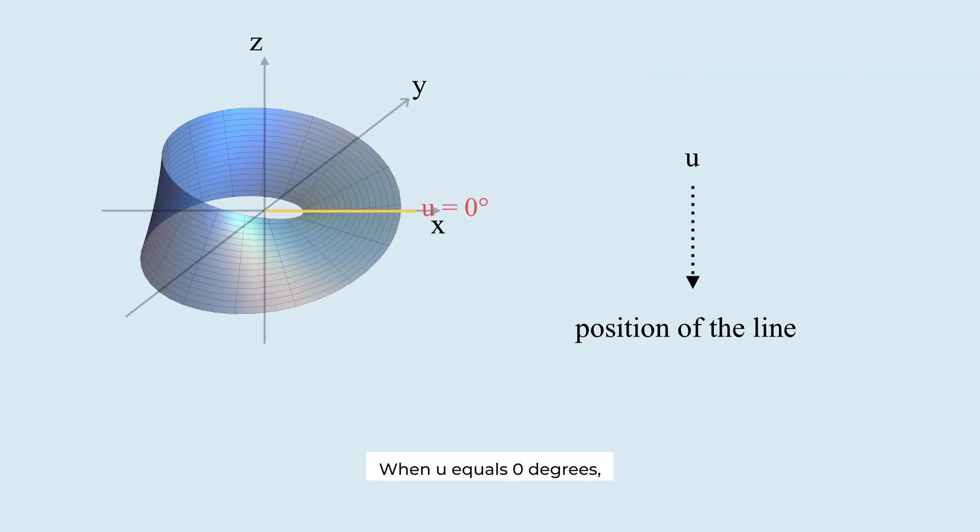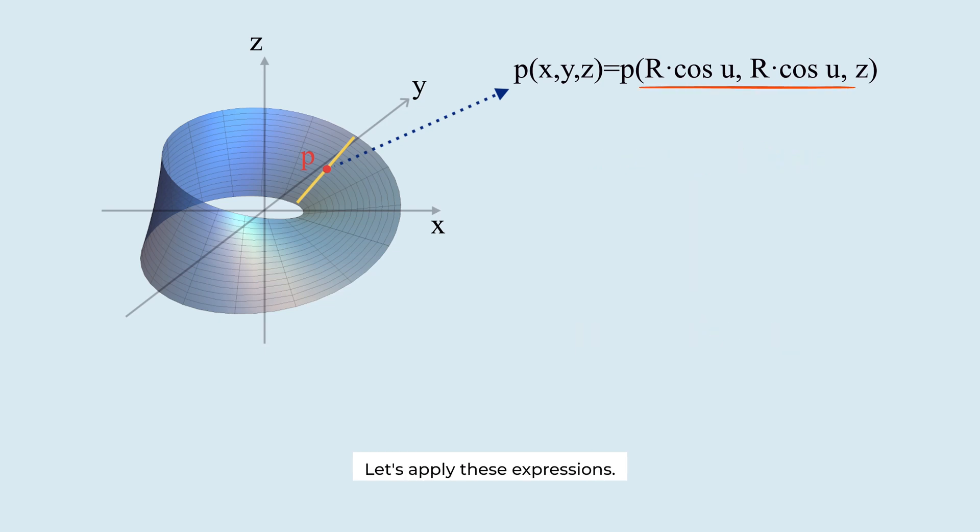When u equals 0 degrees, we start here. When u equals 90 degrees, we are a quarter of the way around. When u equals 360 degrees, we've completed one full loop. U is a variable ranging from 0 to 2π. Let's apply these expressions.